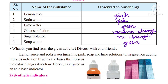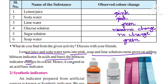So in conclusion: lemon juice and soda water turn pink, while soap and lime solution turn green when hibiscus indicator is added. Since hibiscus indicator changes color in acids and bases, it can be used as an acid-base indicator.